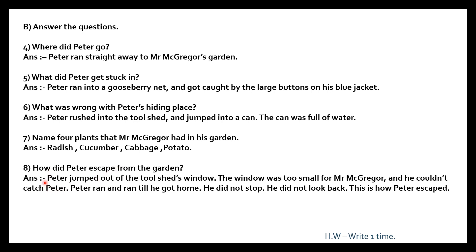Next, how did Peter escape from the garden? He is in the tool shed and jumps out, and then he sees a window — through that window he comes out. But Mr. McGregor could not go through the window because it was very small; only rabbits can enter. So Mr. McGregor could not catch Peter. Peter runs and runs and does not stop till he reaches home. Dear children, you should learn these question answers, and the homework for today is to write them one time neatly in your notebook. Thank you.